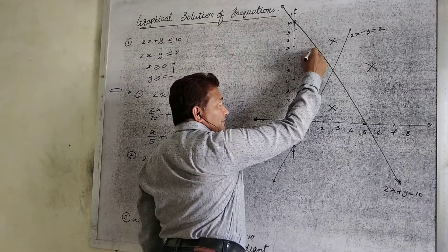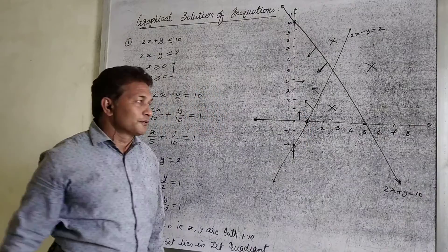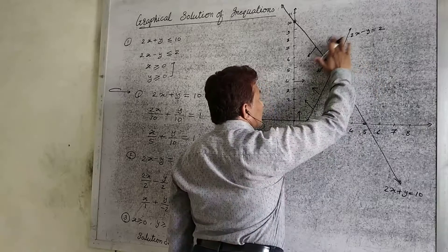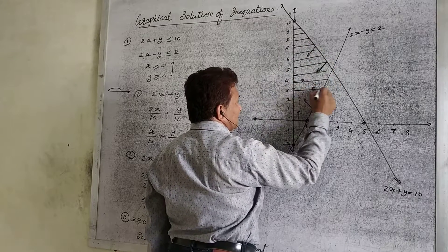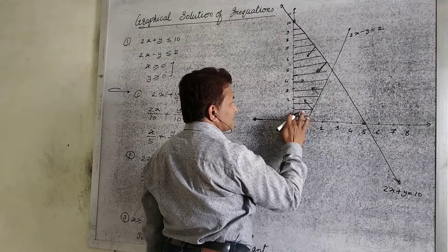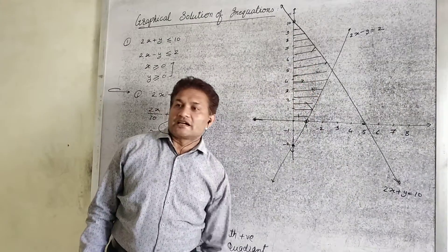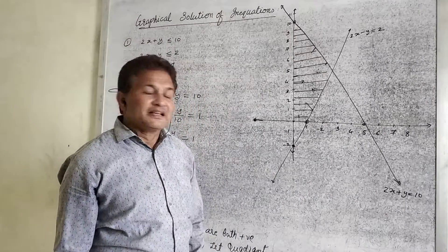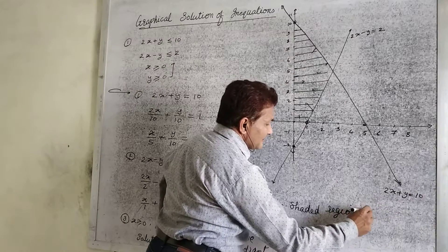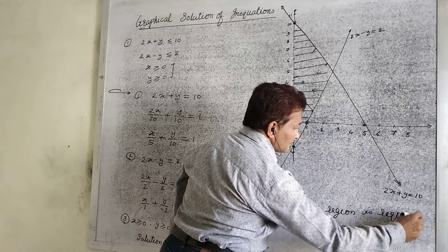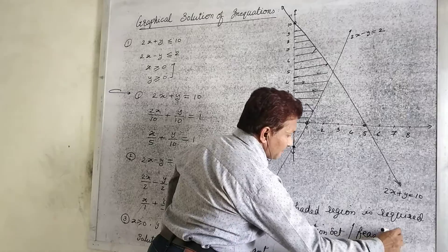The solution set is the shaded region — the set of all points which satisfy all the linear inequalities. The shaded region is the required solution set, also called the feasible region. In this way we find the graphical solution of the given system of linear inequalities.